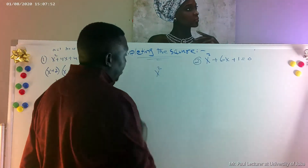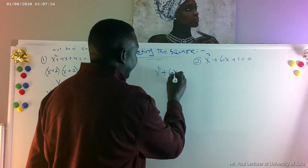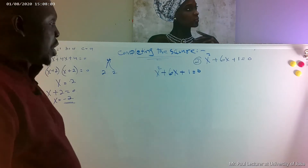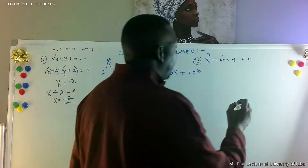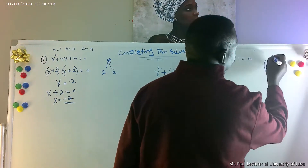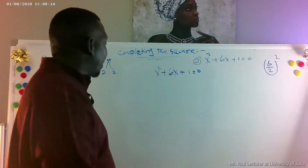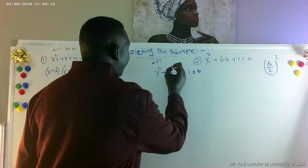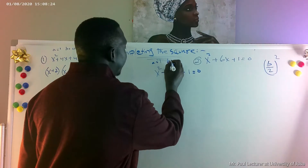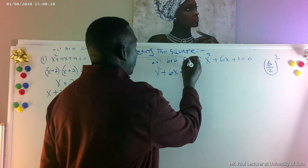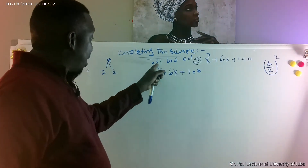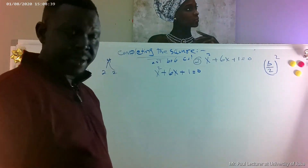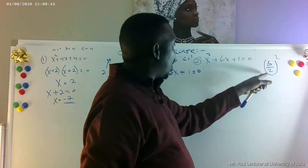To solve x squared plus 6x plus 1 equals zero — that cannot be factored — I have this law: b divided by 2, squared. That will give me the new c. Here, a equals 1 (coefficient of x squared), b equals 6 (coefficient of x), and c equals 1. So b divided by 2 squared gives us: 6 divided by 2 is 3, and 3 squared equals 9. The new c is 9.